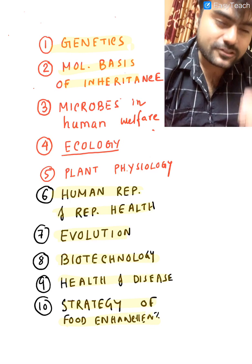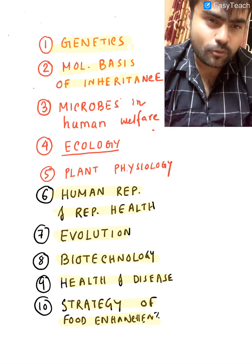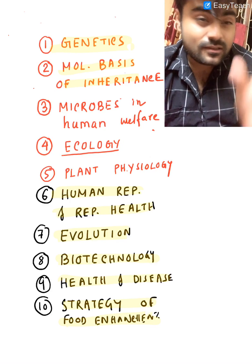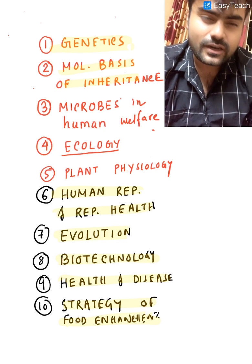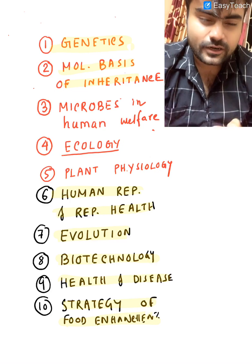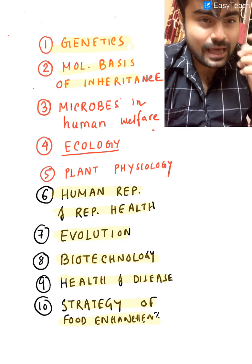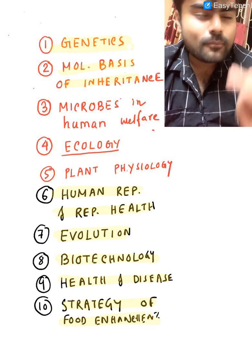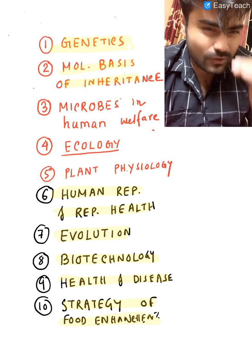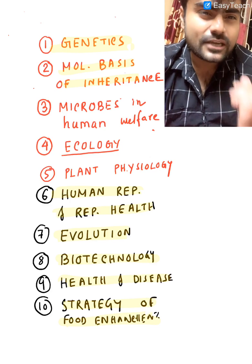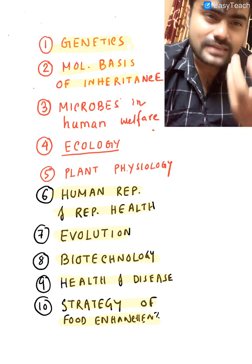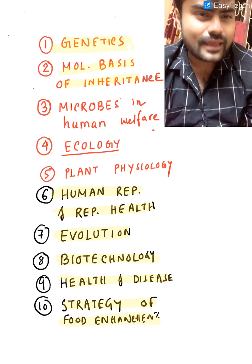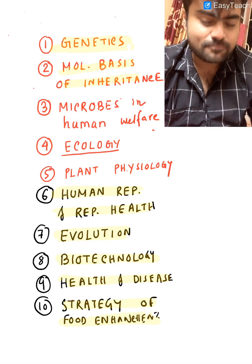From biotechnology — it is a very important topic. Know the definition of selectable marker, what a molecular scissor is, restriction endonuclease and its examples, what a probe is, and oligonucleotides. You have to know the steps of PCR, what downstream processing is, and the applications of biotechnology. Insulin is very, very important. Every line in biotechnology and its applications is important.